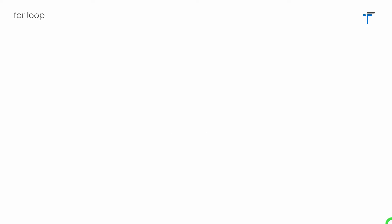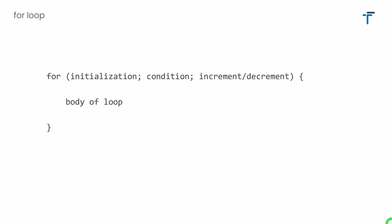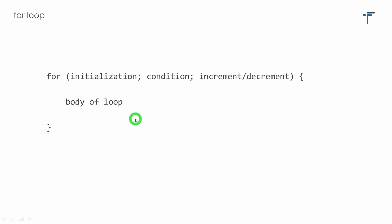The for loop is the most famous and most widely used loop in any programming language. This is the syntax of the for loop. We have to specify the for keyword, then initialization — that is from what point you want to start your loop — then a condition, that is at what point you want to stop your loop, and an increment or decrement, specifying by what value you want to increment or decrement the value of your variable. Then within the pair of curly brackets, we specify the body of the loop — the statement you want to execute repeatedly.